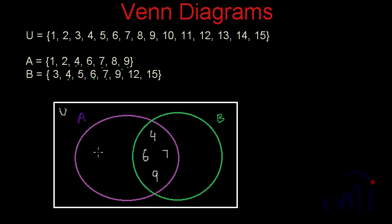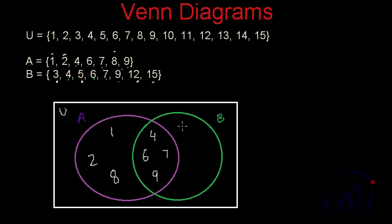Then I will fill the rest of the purple circle — the area belonging only to set A — with the remaining elements: 1, 2, and 8. These elements are not common with set B but are in set A. Similarly for set B, I write 3, 5, 12, and 15 inside the green circle but outside the common overlapping area, since that common area represents elements present in both sets.